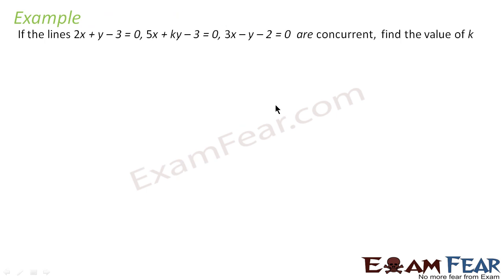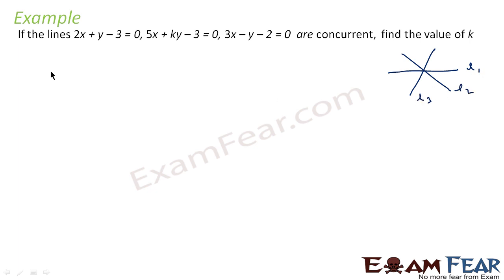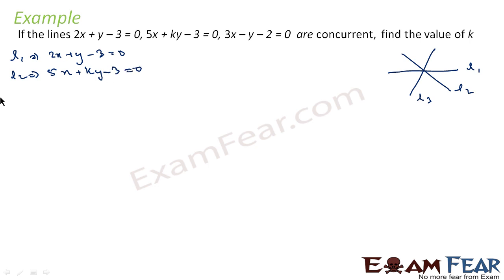Here the question is: lines 2X plus Y minus 3 equals 0, 5X plus KY minus 3 equals 0, and 3X minus Y minus 2 equals 0 are concurrent. We have to find the value of K. Concurrent means they meet at a point — these three lines meet at a common point P. So let's equate line L1 and L3 to get the common point.